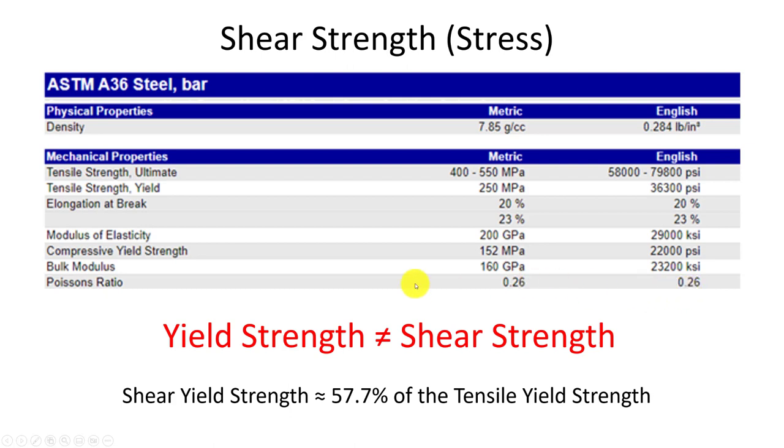Now to get our yield strength in shear, we cannot say it equals the tensile strength. We have to use distortion theory. We're going to take 57.7% of the tensile yield strength. So I'll search on Matweb, find the tensile yield of 36 KSI, and multiply it times that. It comes out to about 20.7 KSI. It's not as strong in shear as it is in yield for tensile.